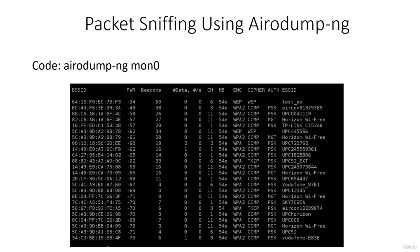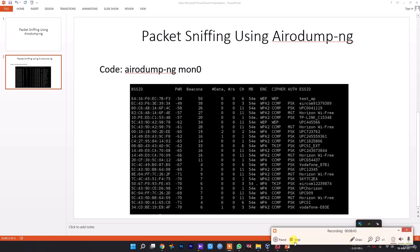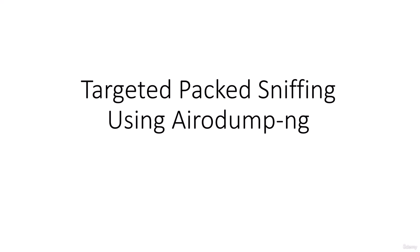Now we'll talk about how to target packet sniffing using airodump-ng. Previously we saw how to use airodump-ng to see all networks within our Wi-Fi range and collect information such as BSSID, channel, distance, and encryption. Now, once we have a target selected, it's more useful to run airodump-ng on that specific network instead of running it against all networks around us.